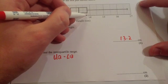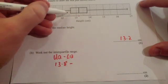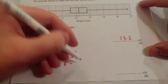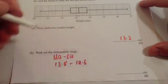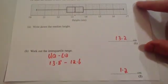This would be 13.8, so 13.8 subtract 12.6. If you subtract those from each other, you're going to get 1.2. So the interquartile range is 1.2 centimeters.